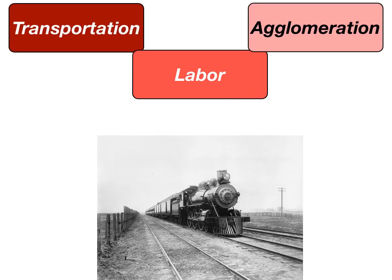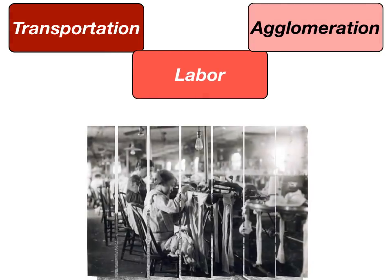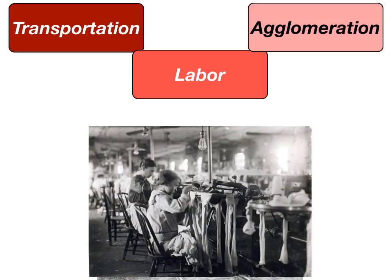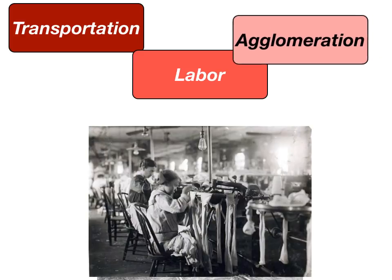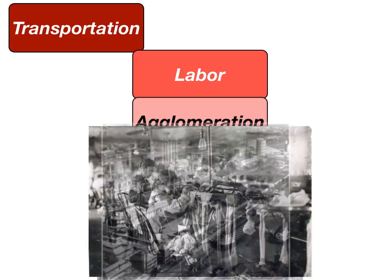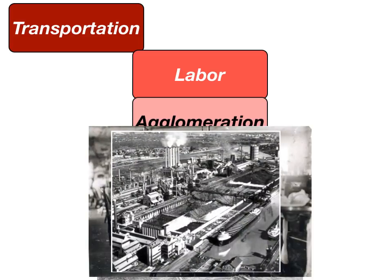The second cost is labor. This is very different than today because back then there were not the same type of child labor laws, and wages were pretty low, especially because unionization had not taken over in North America or Western Europe. Finally, agglomeration — this is a picture of the Ford Motor Works, where we can see many different types of industries all built to support the auto industry, all clustered together. Agglomeration is really the clustering of similar types of firms.